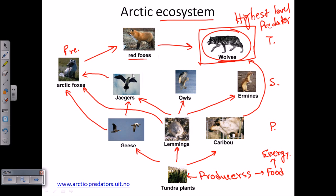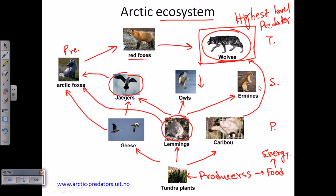If we remove lemmings from the ecosystem, it will ultimately be reflected in the populations of owls and ermines, because the population of both of them will go down. That's very important to understand because all of them have different types of food habits.